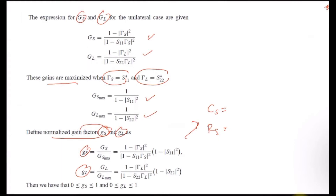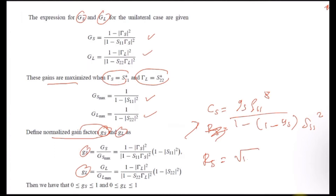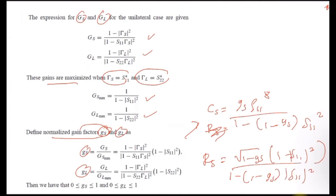You need to recall the formula for C_S and R_S from the previous section: C_S equals G_S times S11 conjugate divided by (1 minus (1 minus G_S) times |S11|²), and R_S equals the square root of (1 minus G_S)(1 minus |S11|²) over the same denominator. So you have the formula to draw both the constant noise figure circle and the constant gain circle.